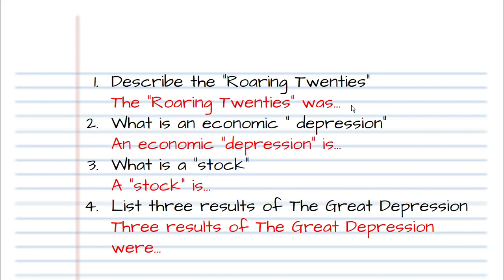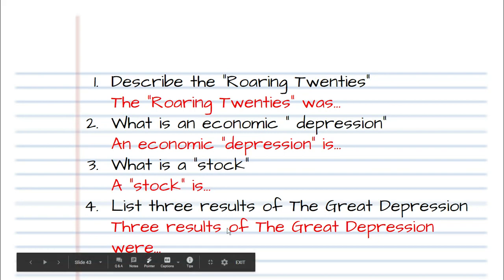Question two: what is an economic depression? Your sentence stem is 'An economic depression is...' and then finish it out. Question three: what is a stock? 'A stock is...' — finish it out. Question four: list three results of the Great Depression. 'Three results of the Great Depression were...' and then tell me three results.